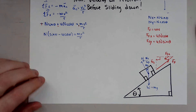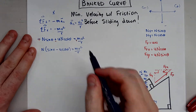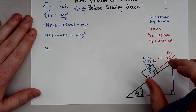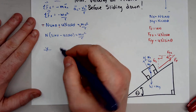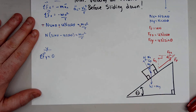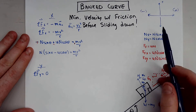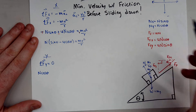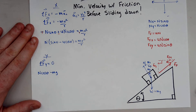Now let's look at the y-direction. We don't want the car to slide down, so all forces in the y-direction must equal zero — the car is in equilibrium. The normal force in the y-direction is positive, so we have positive N cosine theta, minus the weight mg pulling down.